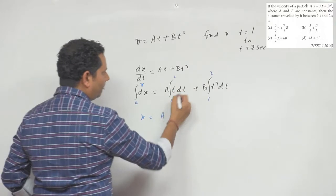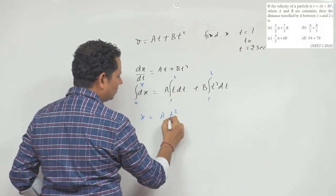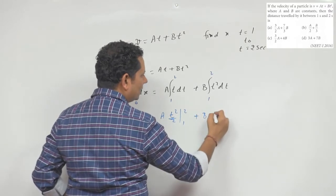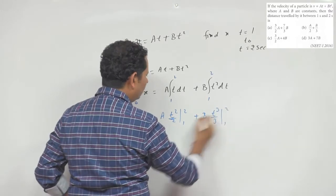The integration of At will give A times t square by 2, with value from 1 to 2. Plus B times the integration of t square gives t cube by 3, with value from 1 to 2.